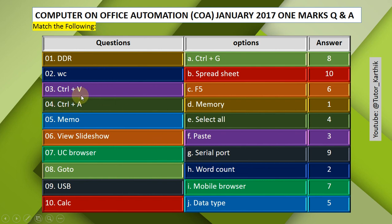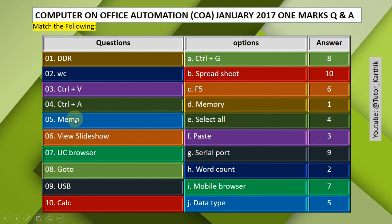Question 3: Ctrl+V — Answer: F, Paste. Question 4: Ctrl+A — Answer: Select All. Question 5: Memo — Answer: Data type. Memo is a data type.